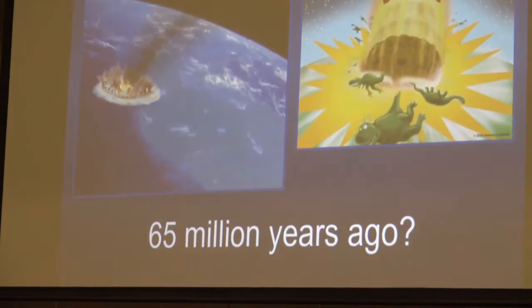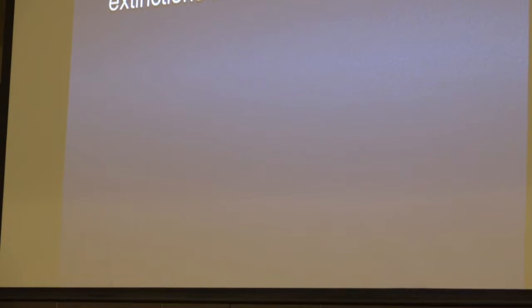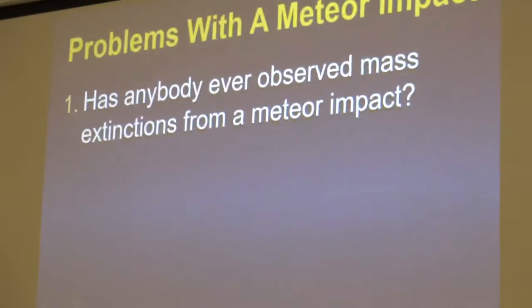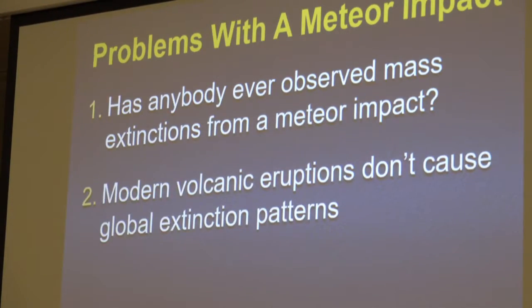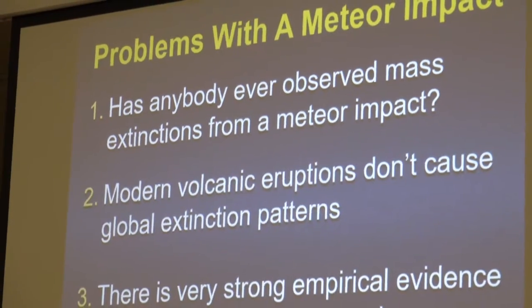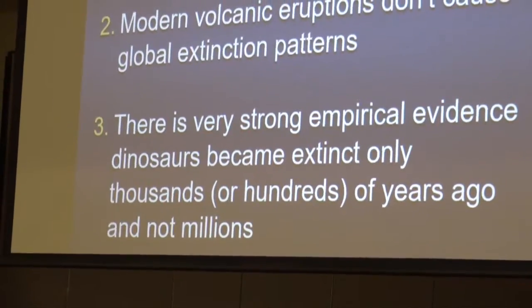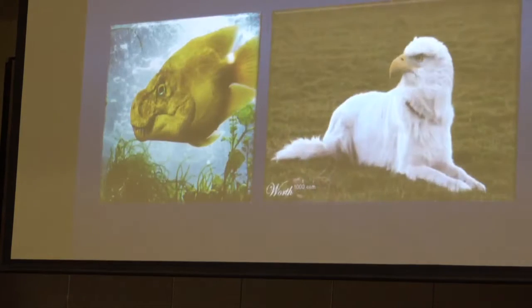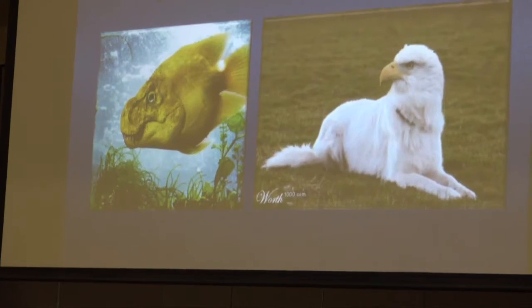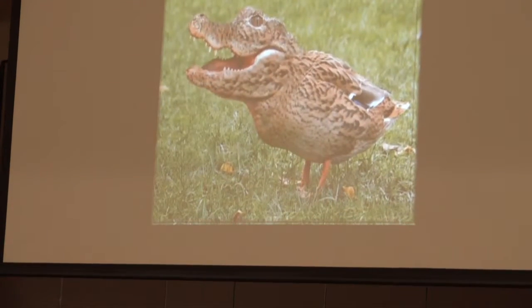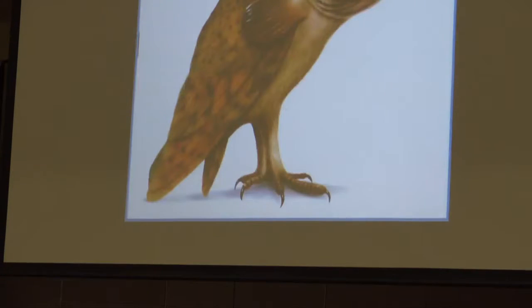They also tell us all the dinosaurs died out when a meteor hit the Earth 65 million years ago. Has anybody observed a mass extinction from a meteor impact? The answer is no — therefore it cannot be a fact; it cannot even be a theory. Theories have to be observable and repeatable. We have very powerful empirical evidence that dinosaurs have only been dead maybe a few thousand years. If dinosaurs evolved, we should find transitional fossils — a gator-bird, a bird-fish, a cat-bird. Anybody seen one of those?